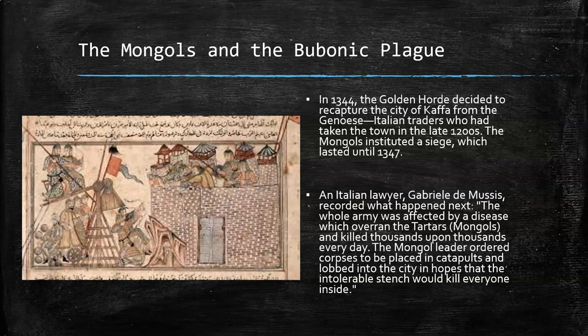Another important historical aspect about the Mongols was their role in the Bubonic Plague. In 1344, the Golden Horde decided to recapture the city of Caffa from the Genoese — Italian traders. This lasted until 1347, which was the beginning of the Bubonic Plague. An Italian lawyer recorded: 'The whole army was affected by a disease which overran the Tartars — that is, Mongols — and killed thousands upon thousands every day. The Mongol leader ordered corpses to be placed in catapults and lobbed into the city in hopes that the intolerable stench would kill everyone inside.' So the Mongols were at ground zero for the Bubonic Plague.